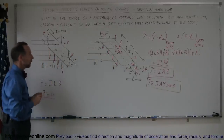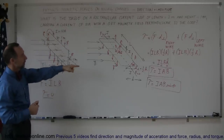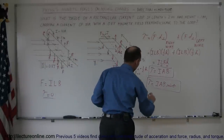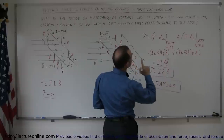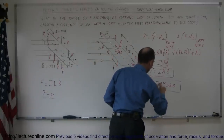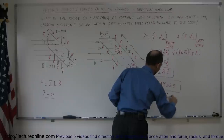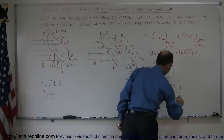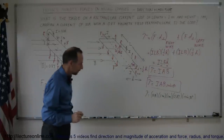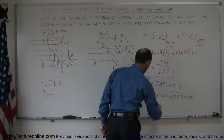Looking back at the problem: to find the magnitude of the torque on a current carrying loop inside a magnetic field, we multiply the current times the cross-sectional area of the loop times the strength of the B field. The torque equals 10 amps times the cross-sectional area (length times height = 2 meters × 1 meter) times the strength of the B field (0.8 Teslas), times sine of 90 degrees (which is 1). We have 10 × 2 = 20, times 0.8 = 16, so the torque is equal to 16 Newton meters.